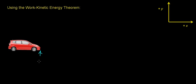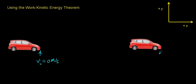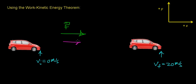In a previous video, we had a car with an initial velocity of 0 meters per second — that is, it started from rest — and then we applied a force to that car, causing it to increase its velocity to a final velocity of 20 meters per second. A force had to act in this direction, which caused it to accelerate in this direction. One piece of information I didn't give you in the last video was that the mass of the car was equal to exactly 1,000 kilograms.